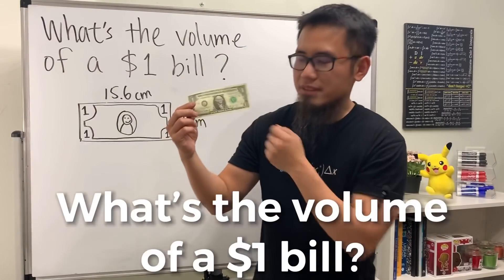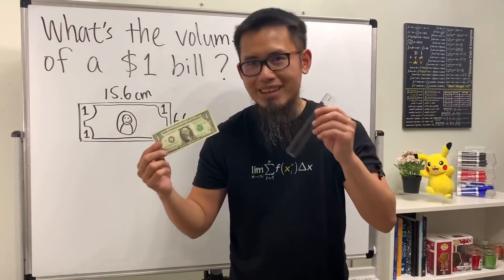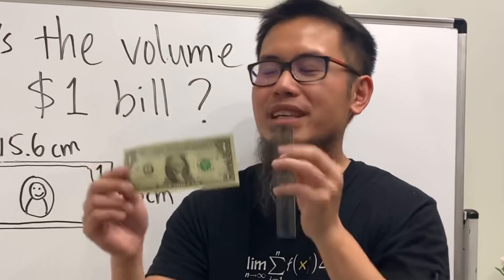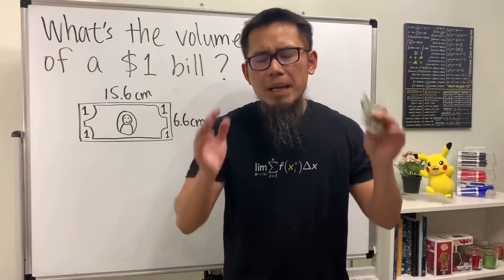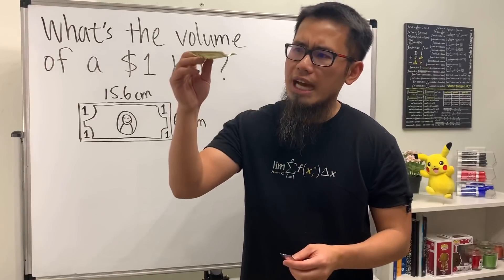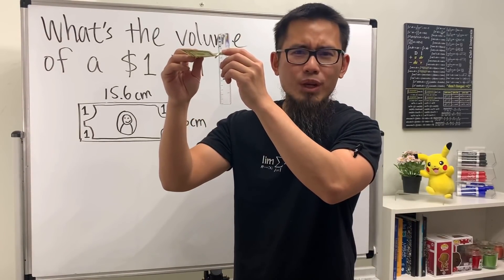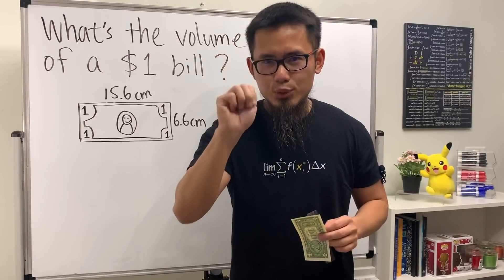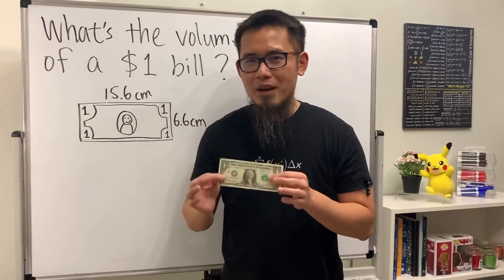What's the volume of this dollar bill? We'll be using a ruler — we can easily measure the length and also the width and get those numbers. But the question is, how are we going to measure the height? Think about it for five seconds: five, four, three, two, one.